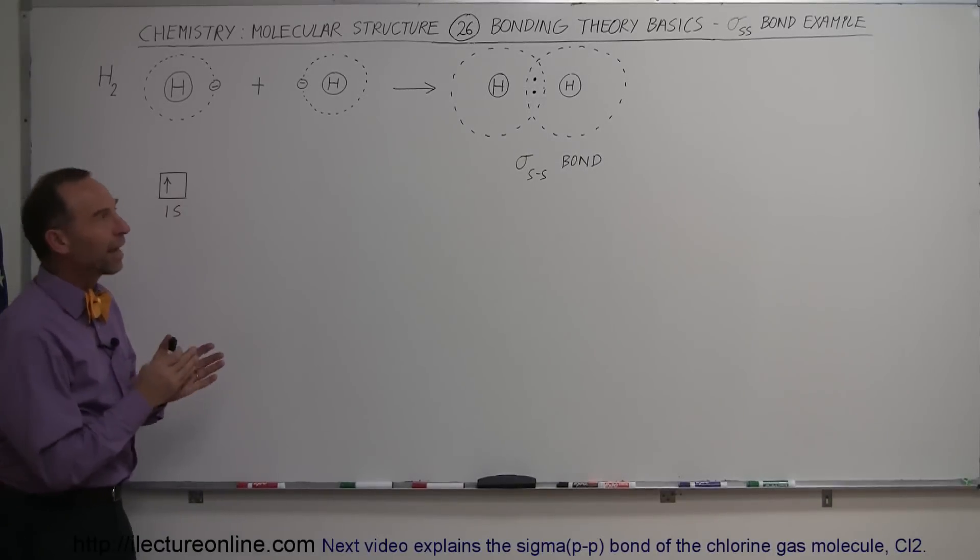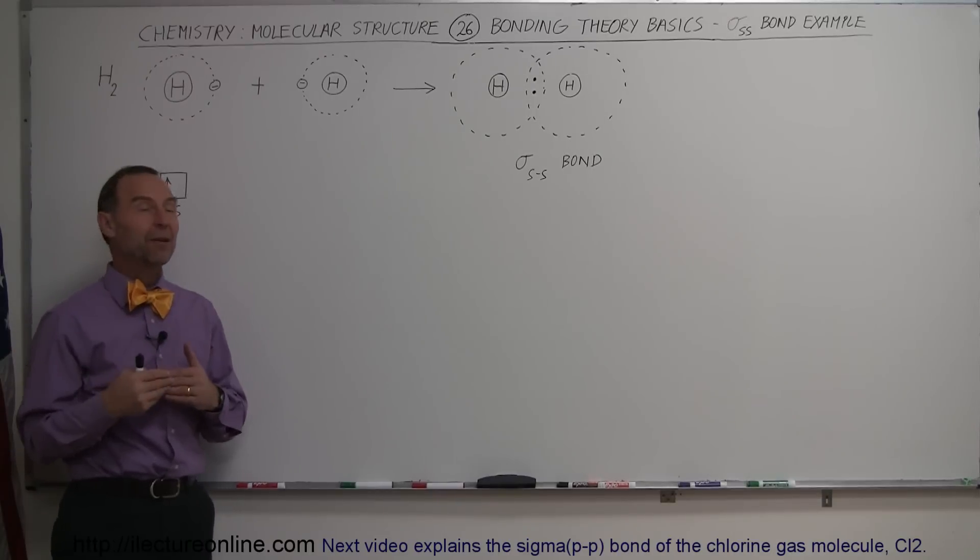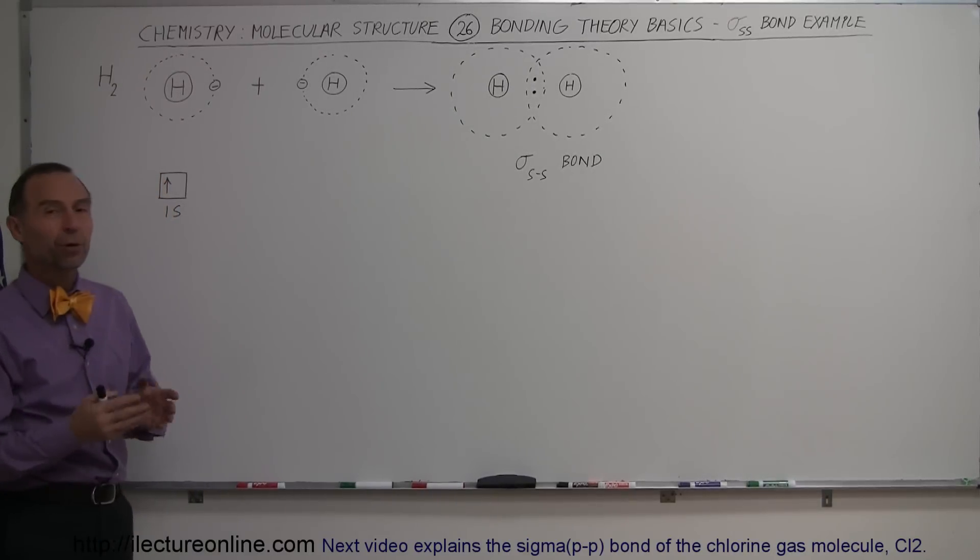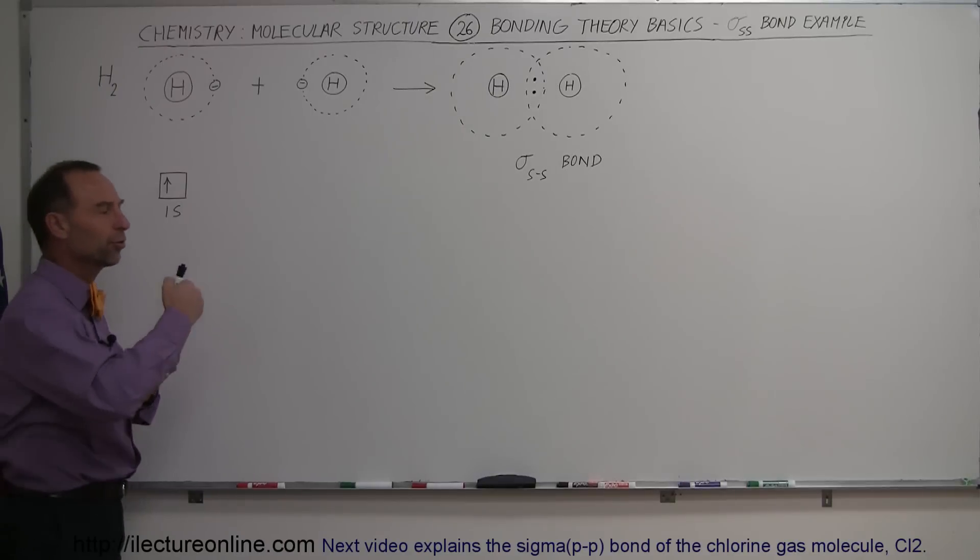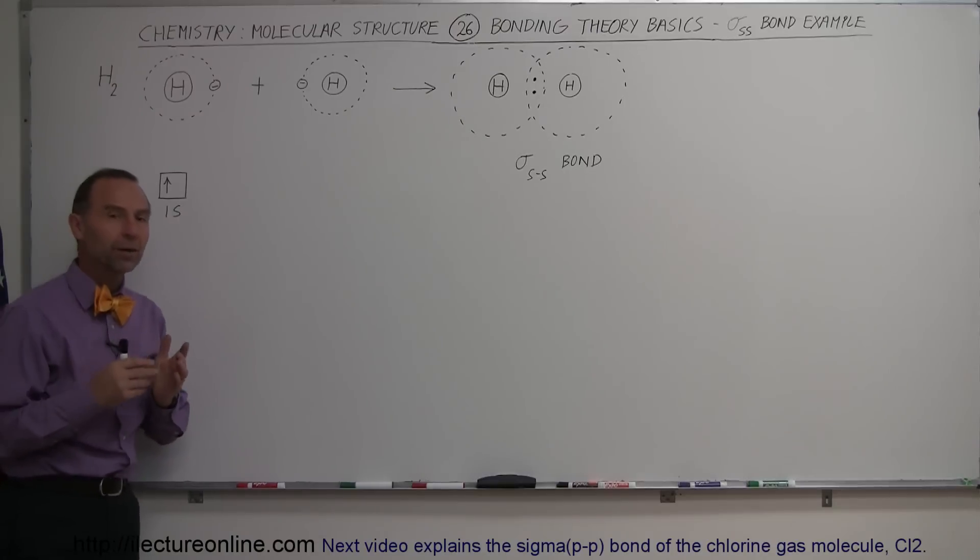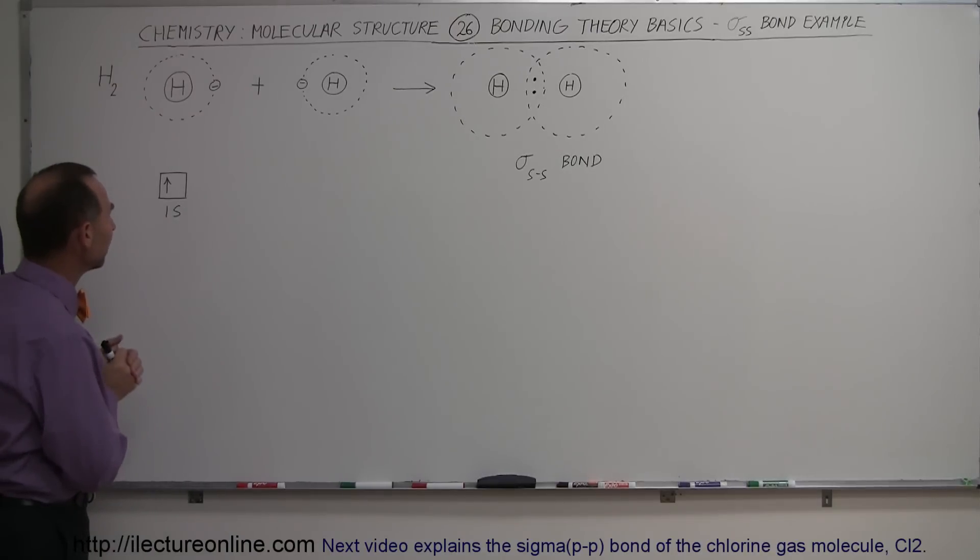In order to better illustrate the different kinds of sigma and pi bonds that we can have, we're going to do some examples. And this is a very simple example. We've seen this before. But just so you can see the procedure in which you want to go through this process, we're going to take another look at the hydrogen bond, the bond between two hydrogen atoms.